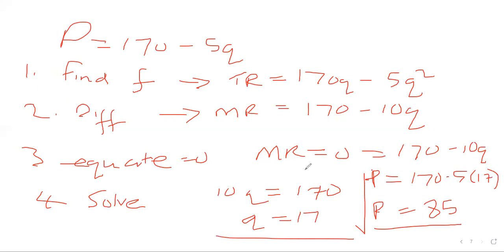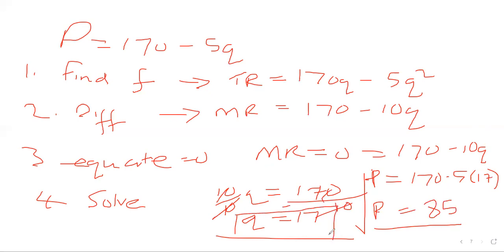When we equate to zero — 170 minus 10Q equals zero — 10Q moves to this side, so 10Q equals 170. We divide both sides by 10, so Q equals 17. Our price is substituted back in the original formula to get 85.